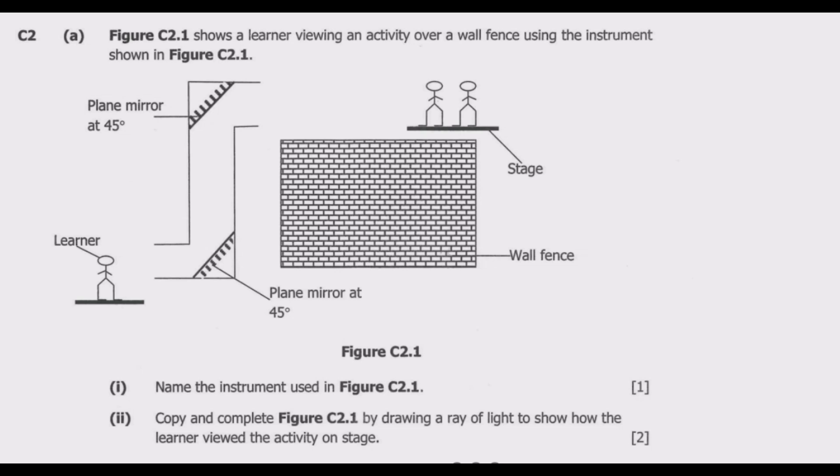So we have the stage then we have the learner basically standing here. Number 1 asks: name the instrument used. If you look at this instrument we are seeing total internal reflection for this learner to be able to see the stage. This instrument is normally used by submarines which is known as a periscope.